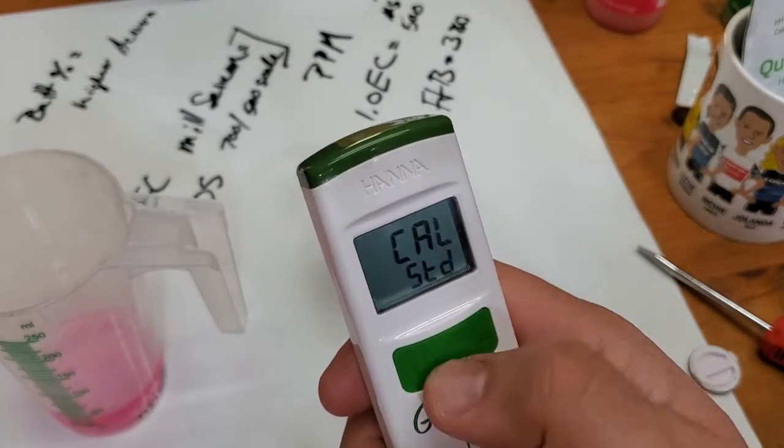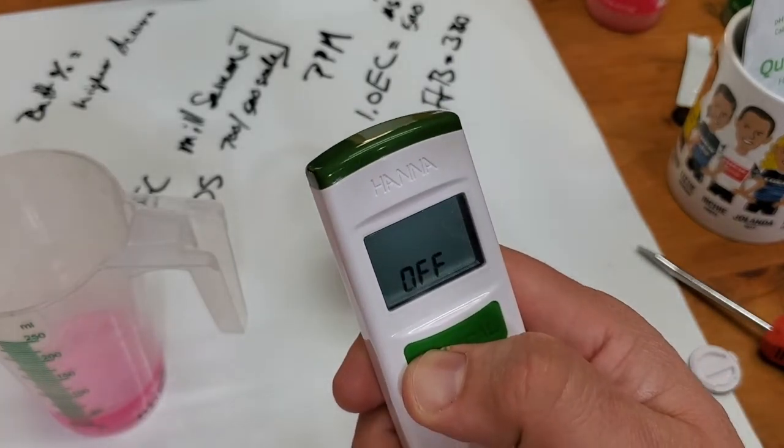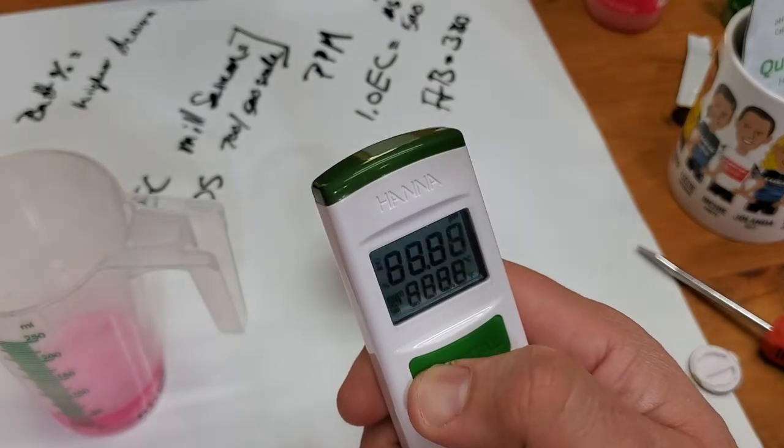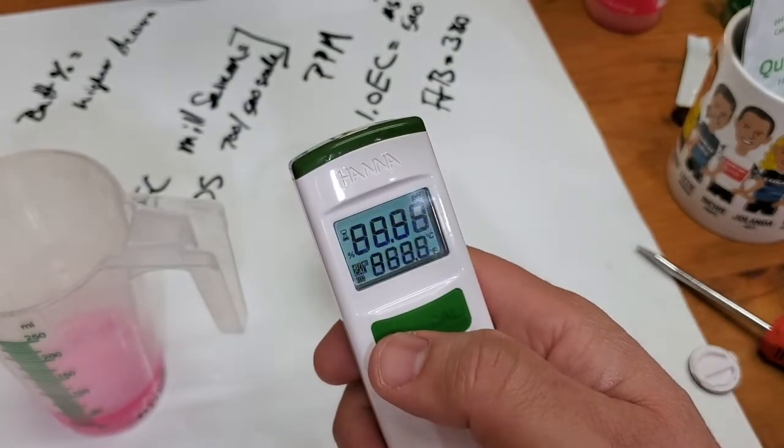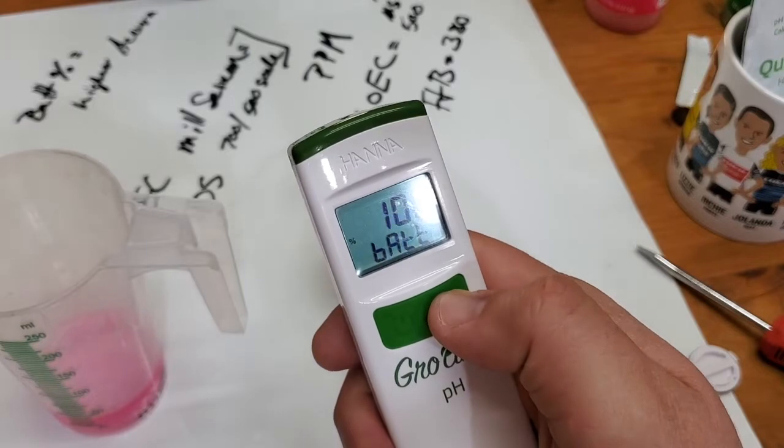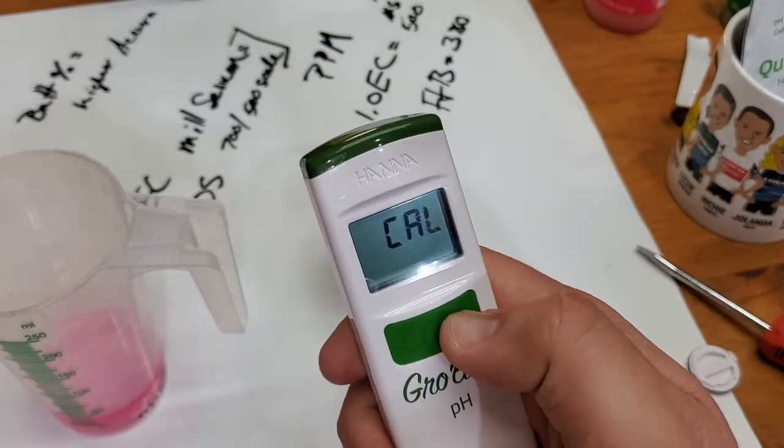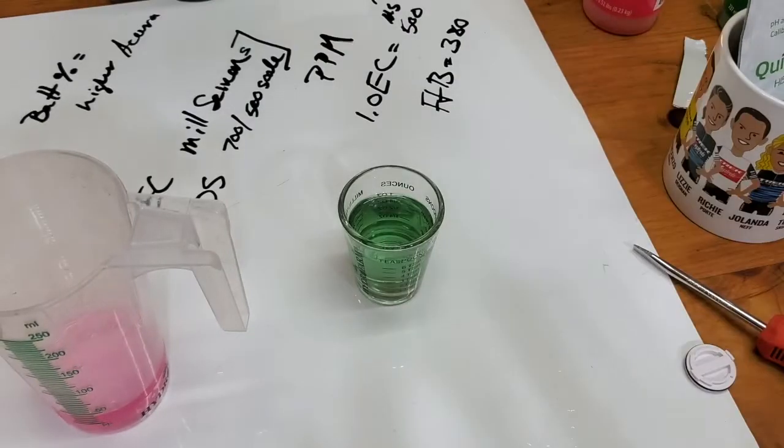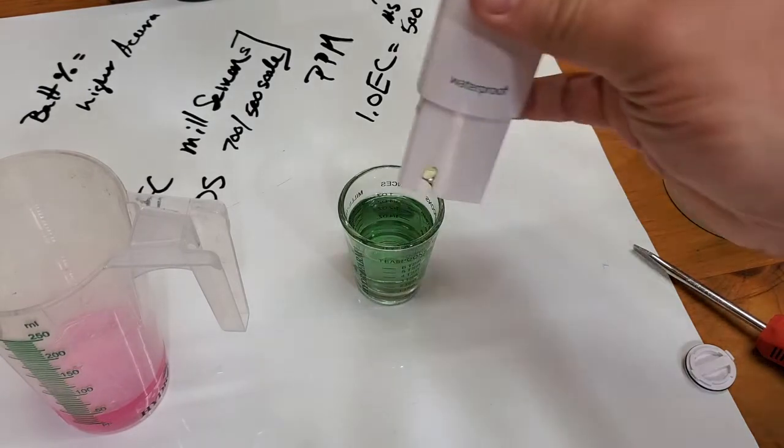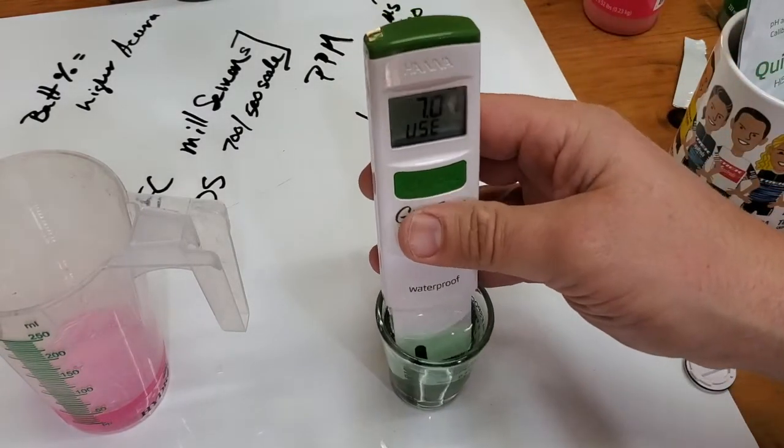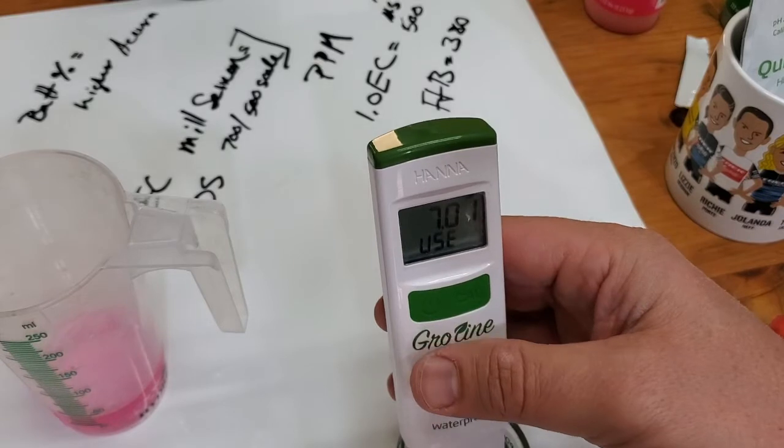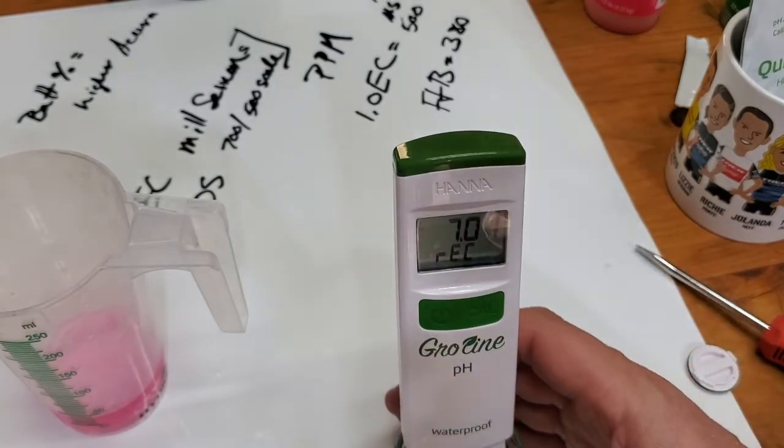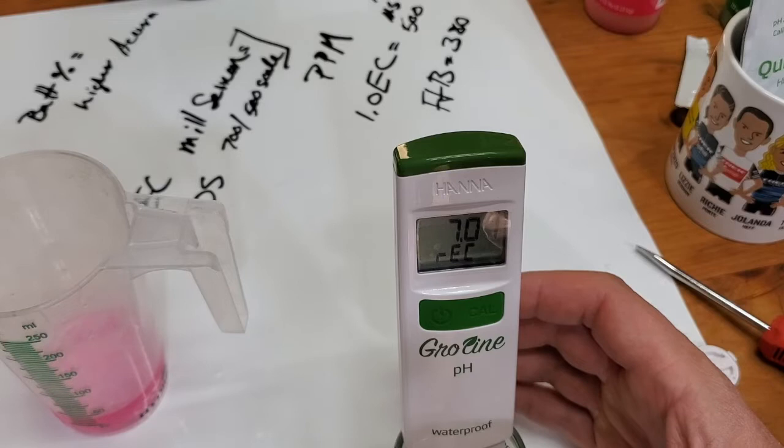We want to calibrate it, so we hold down the calibration. It tells me to go into 7.0. There's a 7.0, so it's recording that.